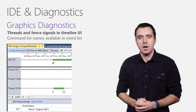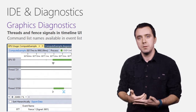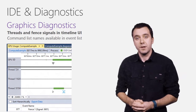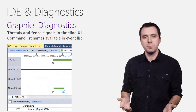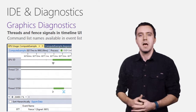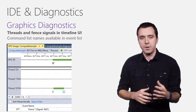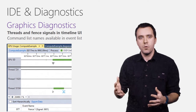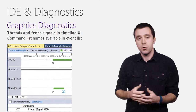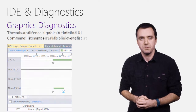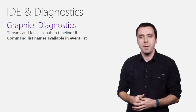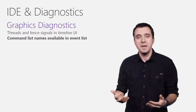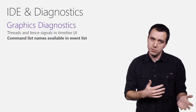Moving to IDE and diagnostics, Update 1 comes with several improvements for game and graphics developers. The graphics profiler now shows thread information as well as fence signals, making it easier to understand the interaction between the GPU and the different threads of your application, and also correlate that information back to your code or to any other logging you might be using. Similarly, command list names are now listed in the event list, with the goal of making it easier to correlate the events back to your code.